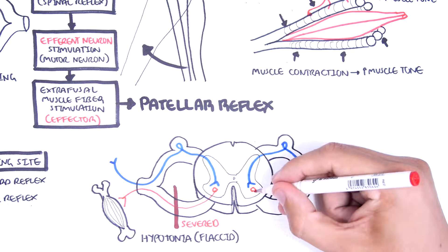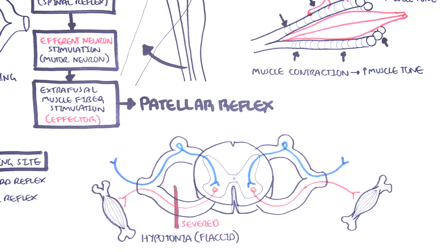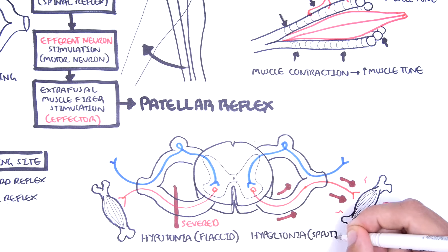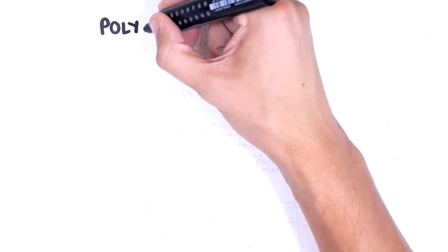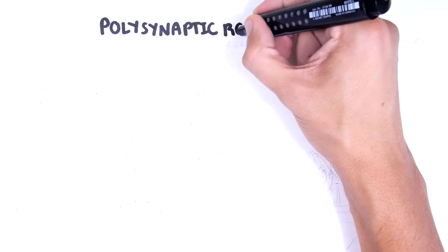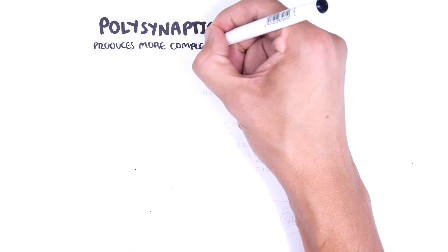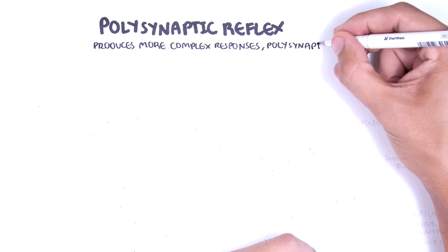If the efferent neuron, the motor neuron, is continuously firing signals, or there is no inhibition to that efferent neuron, the effector organ being the muscle will also get continuously stimulated and become hypertonic, spastic. The patellar reflex was an easy example of a monosynaptic reflex, a single synapse, the simplest reflex arc. A polysynaptic reflex produces a more complex response. There can be anywhere from two to hundreds of synapses within a polysynaptic reflex arc.